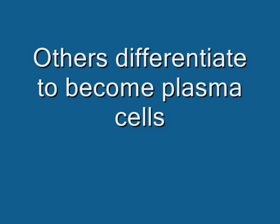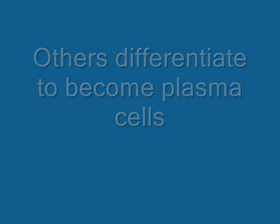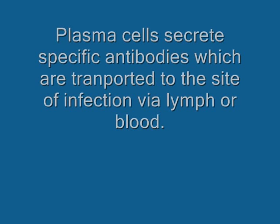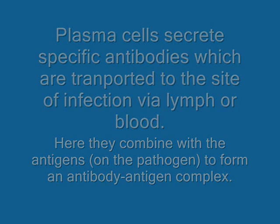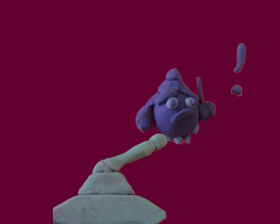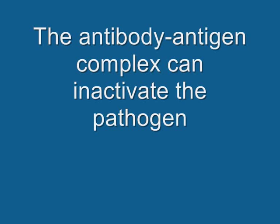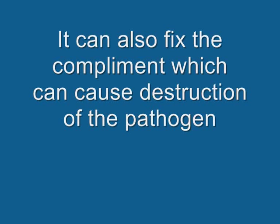Others differentiate to become plasma cells. Plasma cells secrete specific antibodies, which are transported to the site of infection via lymph or blood. Here, they combine with the antigen to create an antigen-antibody complex. The antibody-antigen complex can inactivate the pathogen. It can also fix the complement, which can cause destruction of the pathogen.